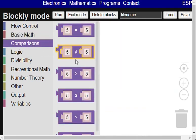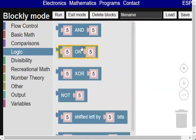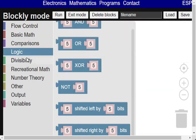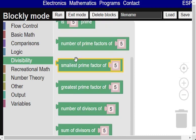Comparisons that are used inside the flow control blocks. Logic operations with boolean and shifting blocks. Divisibility that includes greatest common divisor and least common multiple and some blocks for prime information and divisors.